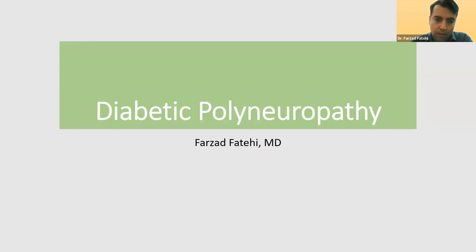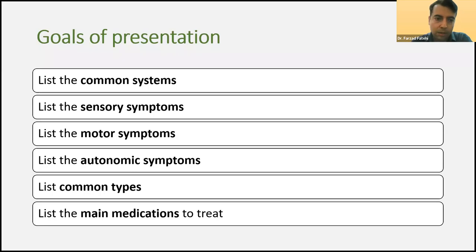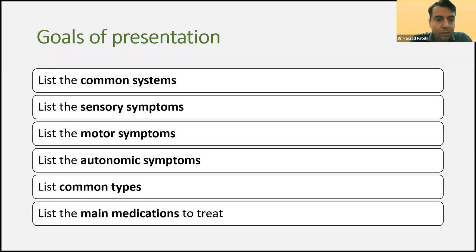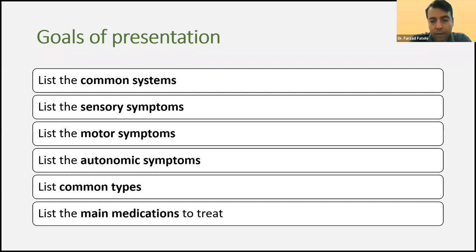My talk is about diabetic polyneuropathy. The goals of my presentation are to list the common systems involved by diabetes, then list the sensory symptoms, motor symptoms, autonomic symptoms, common types of diabetic polyneuropathy, and the main medications that we usually use to treat patients.